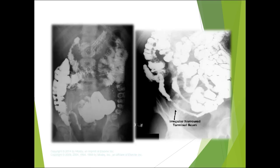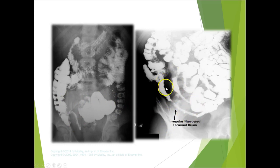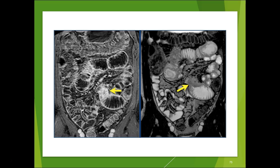Here you can see the appendix normally, and then the string sign of Crohn's — the bowel is really narrowed going into the large bowel due to inflammation, causing a lot of pain. On MR enterography you can see the bowel lumen very clearly with contrast — a spot right there — a really beautiful study.